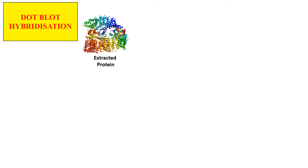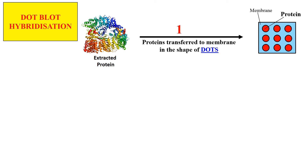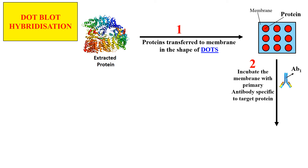Now let us discuss the procedure of dot blot hybridization. Suppose we want to specifically identify a protein from a protein sample. The first step is extraction — the extracted protein is taken and transferred to the membrane. As the technique is dot blot, the sample is transferred in the shape of circular dots. These red color circular dots represent the proteins. In the next step, as we want to specifically detect a target protein, we use a primary antibody that is specific to the target protein and will only bind if it finds its target protein.